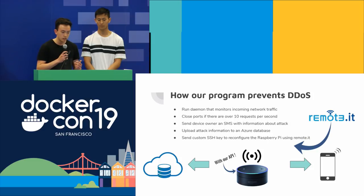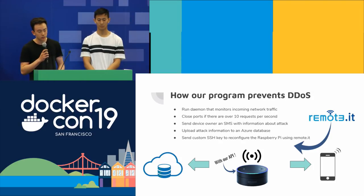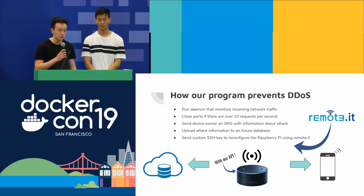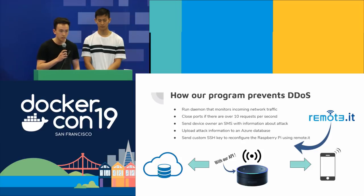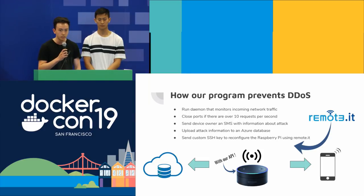Every time there was an attack, it would upload that information to an Azure database. That Azure database was used as another way to detect blacklisted IPs, so that we didn't just have to detect DDoS attacks — we could use the blacklisted information as another way to prevent cybersecurity attacks.